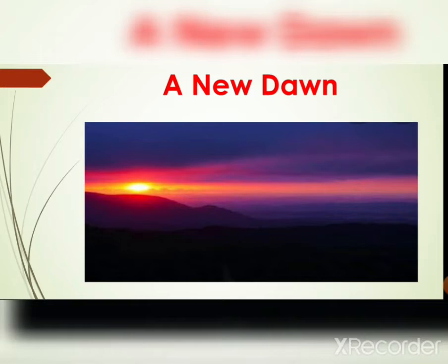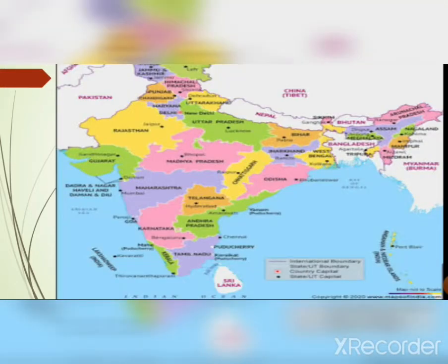As the nation was born, a new dawn came with new challenges and new opportunities for the nation to face. Our country is a very big country. It consists of many states — it is divided into 28 states and 8 union territories, including the Indian National Capital Territory of Delhi.